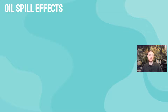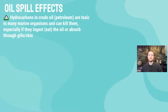Now we'll look at another impact on aquatic ecosystems from humans: oil spills. Oil contains hydrocarbons, and these hydrocarbons are toxic to many different marine organisms. They could kill them, and that's especially lethal if they're absorbed through the skin, enter through the gills, or if the organism actually ingests the oil directly into its bloodstream or stomach.